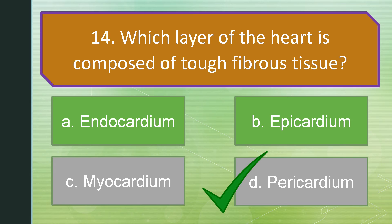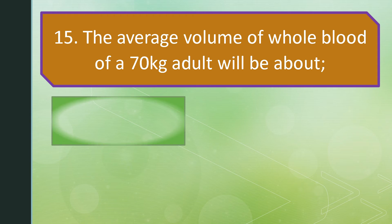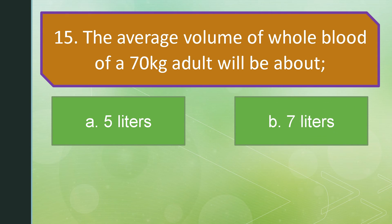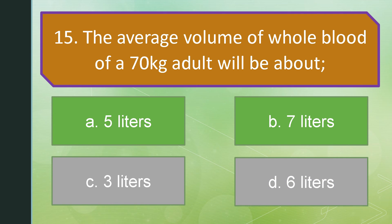For number 15. The average volume of whole blood of a 70 kilogram adult will be about blank. Letter A: 5 liters. Letter B: 7 liters. Letter C: 3 liters. Or letter D: 6 liters. The answer is letter A: 5 liters.